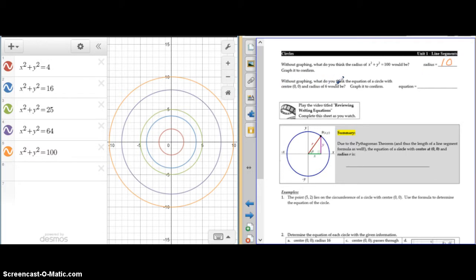Without graphing, what do you think the equation of a circle with center 0, 0, and a radius of 6 would be? Did you guess? Well, hopefully you get it by now that they all start with x squared plus y squared.